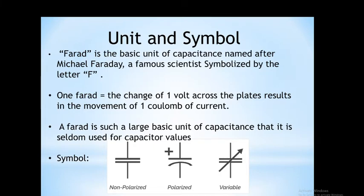The symbol for the capacitor may be non-polarized, meaning no polarity is shown. For the polarized capacitor, one plate has positive polarity indicated. For the variable capacitor, an arrow indicates the variation in capacitance value. These are the symbols for the capacitor.